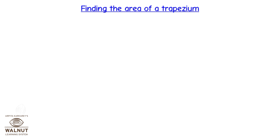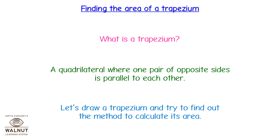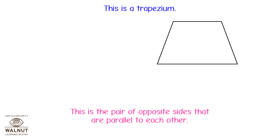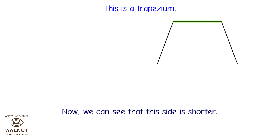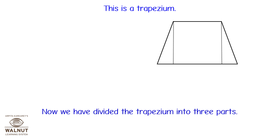Finding the area of a trapezium. What is a trapezium? A quadrilateral where one pair of opposite sides is parallel to each other. Let's draw a trapezium and try to find out the method to calculate its area. This is the pair of opposite sides that are parallel to each other. We can see that one side is shorter, so let's draw perpendicular lines from both points to the opposite parallel side. Now we have divided the trapezium into three parts.